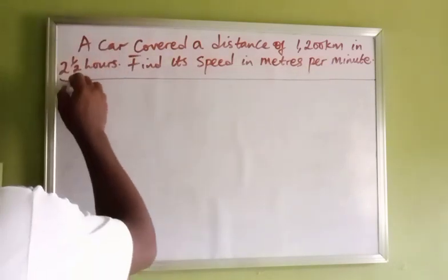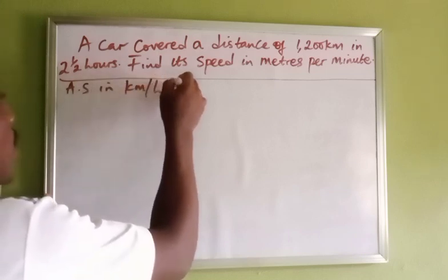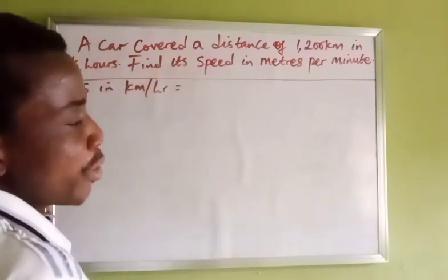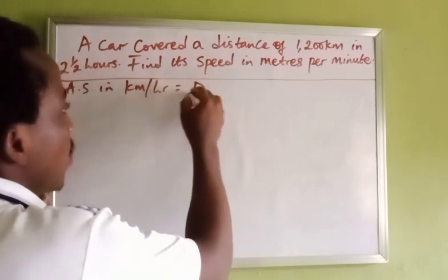So the average speed in kilometers per hour will be... the formula for average speed is distance traveled divided by time taken. That's d over t.